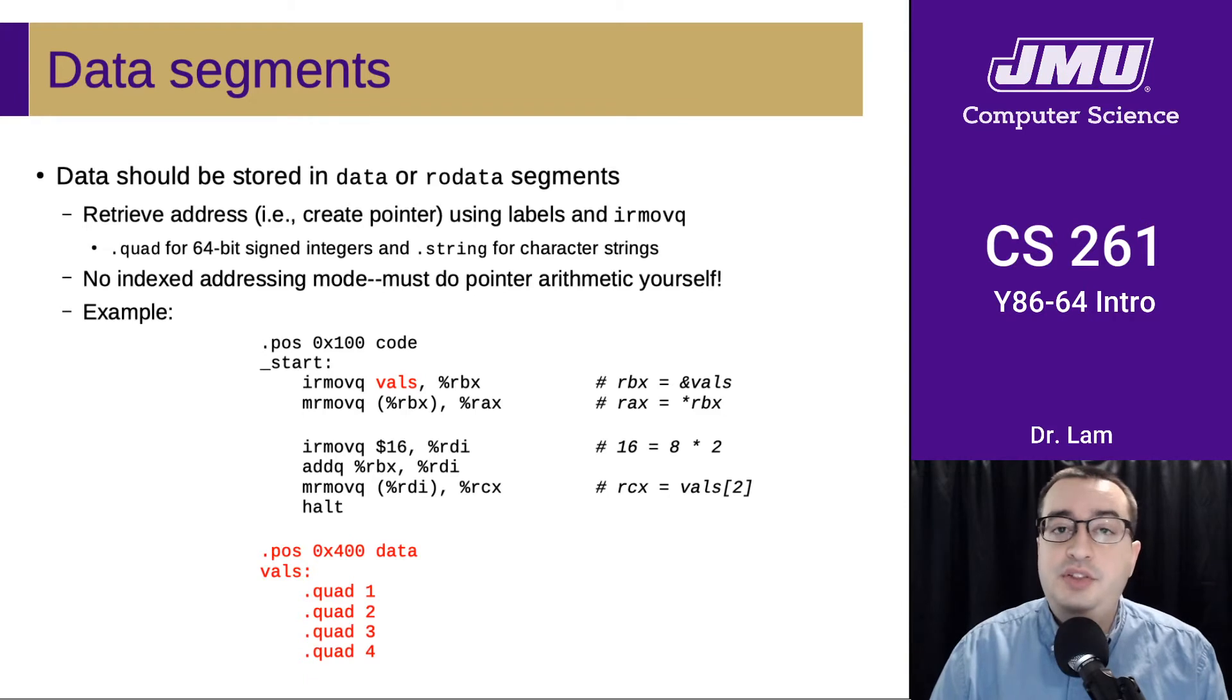There's also these data segments that store data. And this can be retrieved using the address, using labels and IR move queue. So here's an example where we have an array of integers out in the data segment, which begins at hex 400. And so we can use this label as an address. So this initializes RBX to the address of this value array. And so now we can load values in.